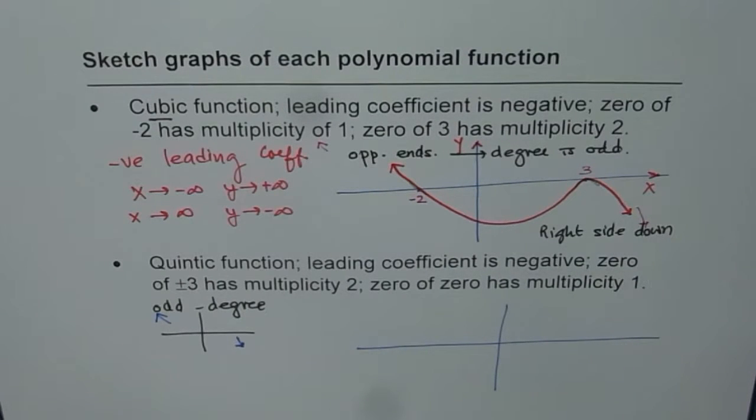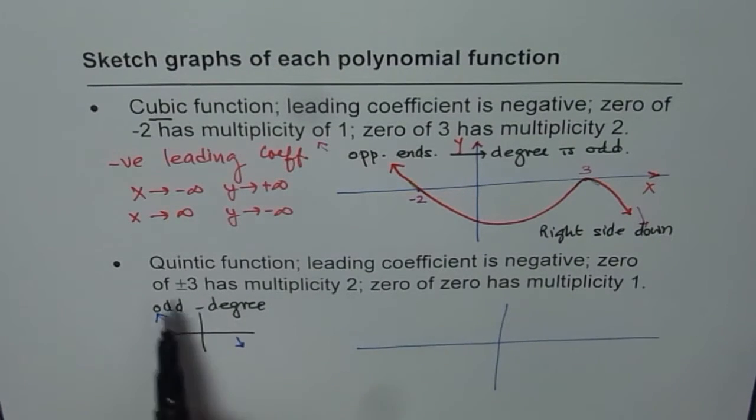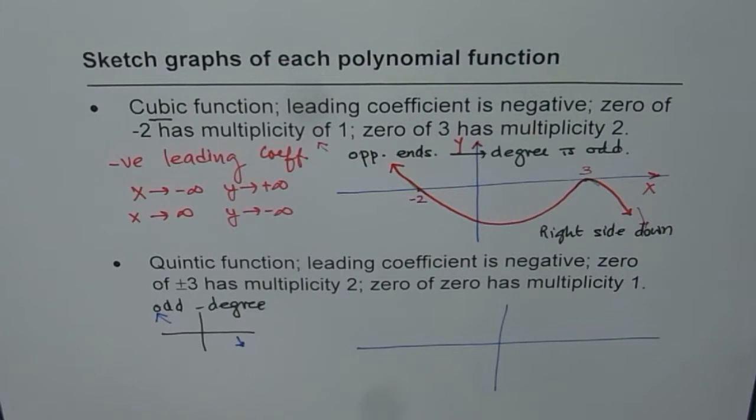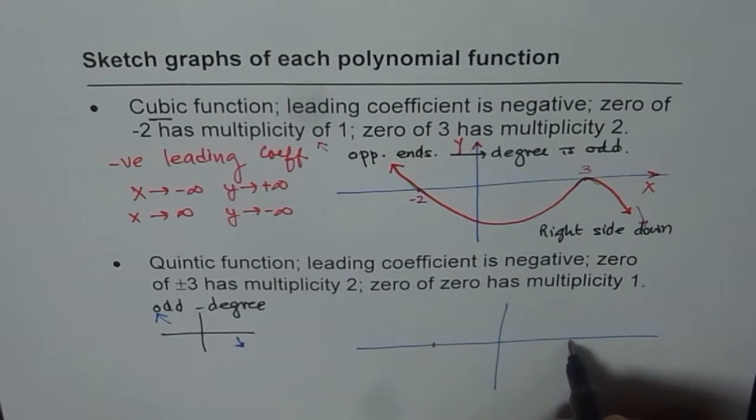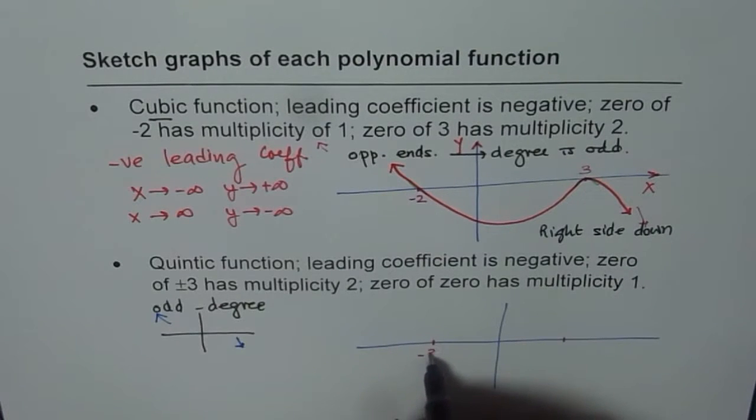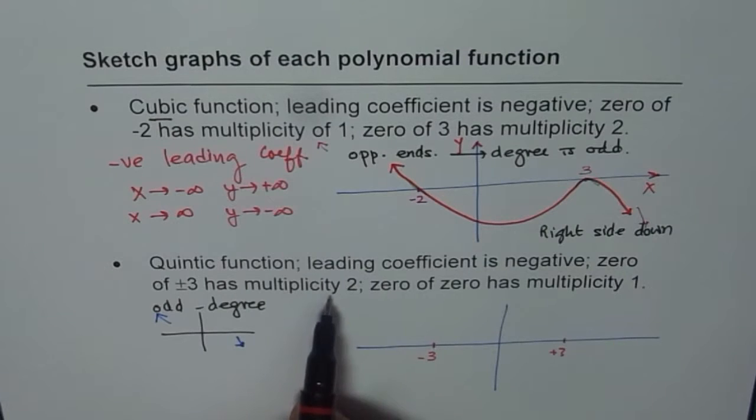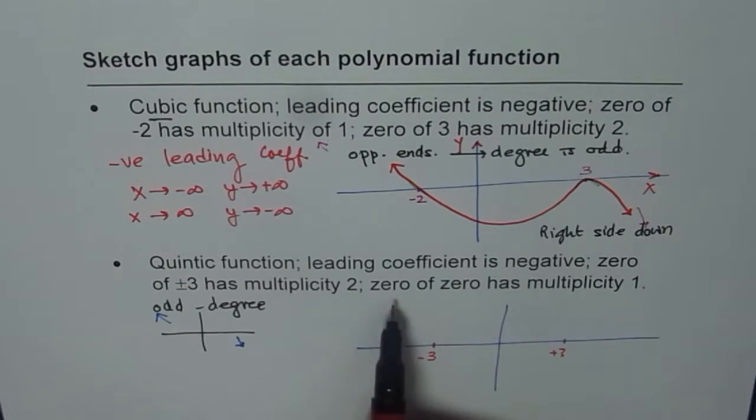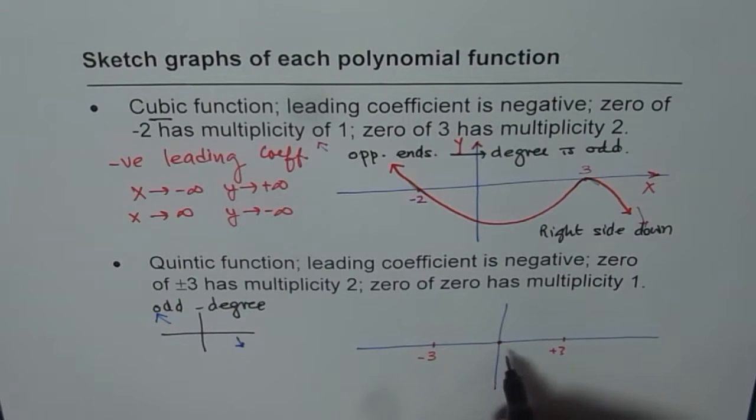So here what do we have? We have quintic, leading coefficient negative, zeros at plus minus 3 has multiplicity of 2. So there are these two zeros. Let us say this is my minus 3, this is plus 3. But they are multiplicity of 2. Then 0 of 0 has 1. So there is 1 zero here also, which is 1.